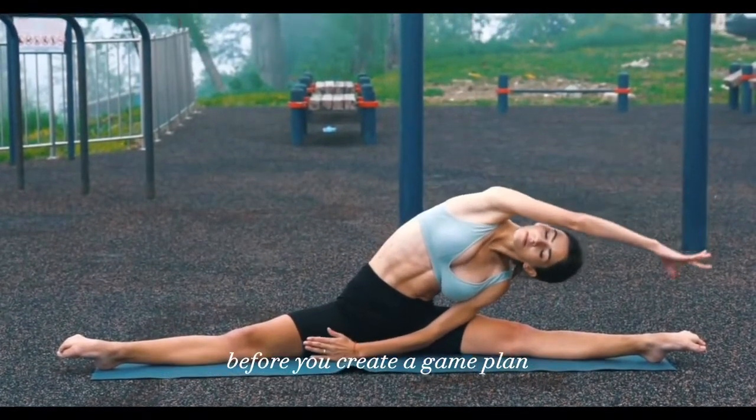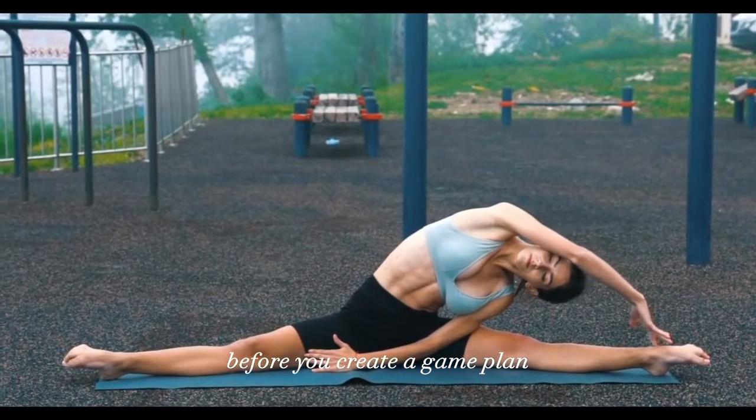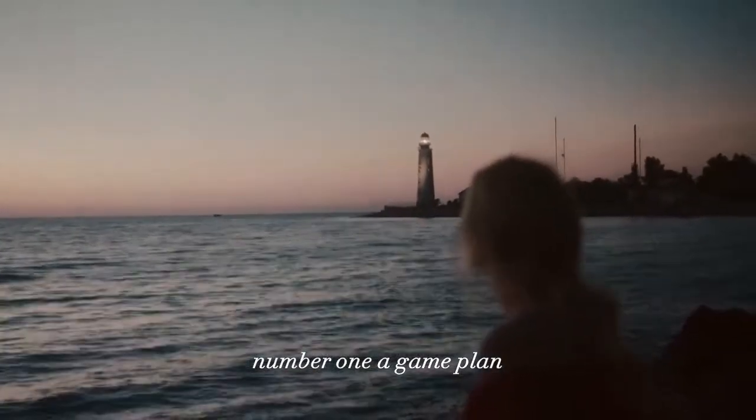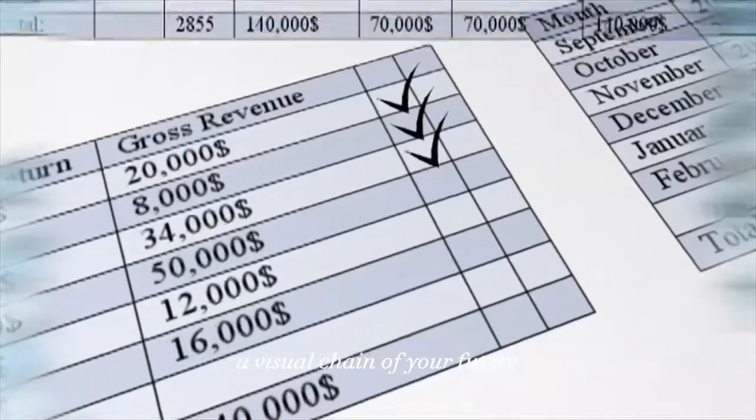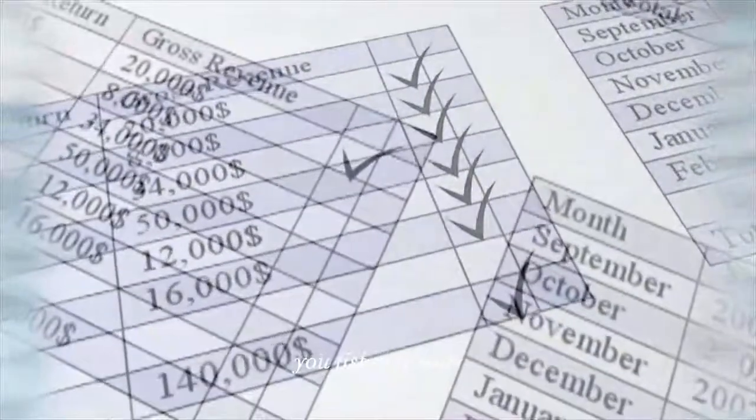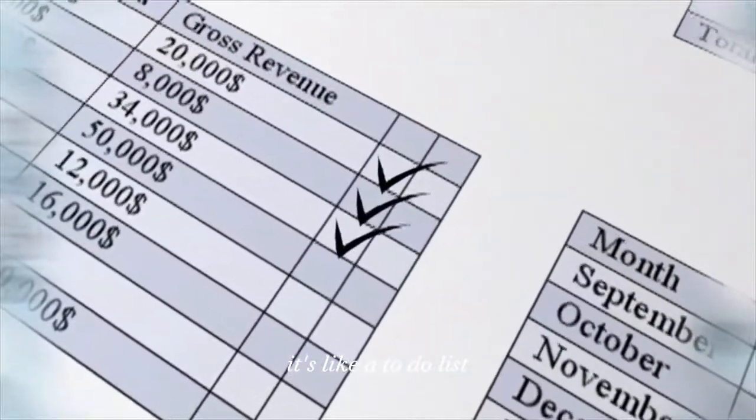Number one: a game plan, a visual chain of your future, is like a spreadsheet. Instead of listing numbers, you list activities. It's like a to-do list.